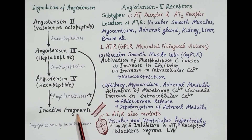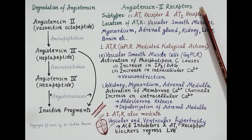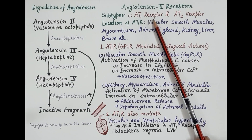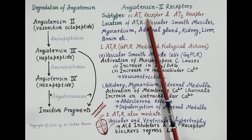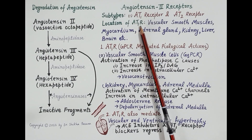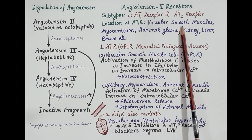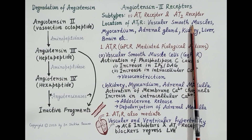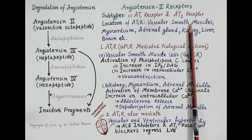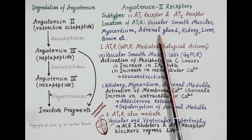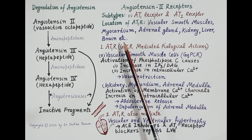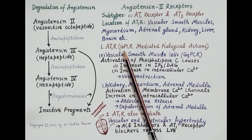There are two subtypes of angiotensin 2 receptors: angiotensin 1 receptor (AT1) and angiotensin 2 receptor (AT2), where AT1 is the main receptor. Angiotensin 2 produces the majority of its actions by binding to the AT1 receptor, which is located on vascular smooth muscles, myocardium, adrenal gland, kidney, liver, and brain.